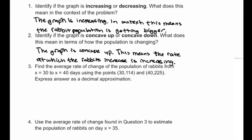It says find the average rate of change of the population of rabbits from x equals 30 to x equals 40 days, using the points 30, 114 and 40, 225. So this means we need to use the slope formula.